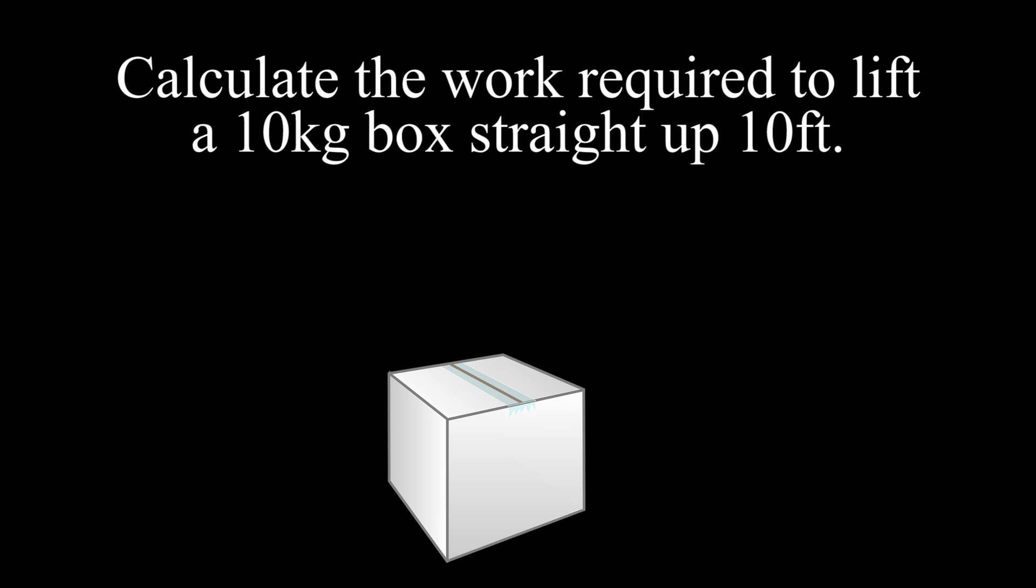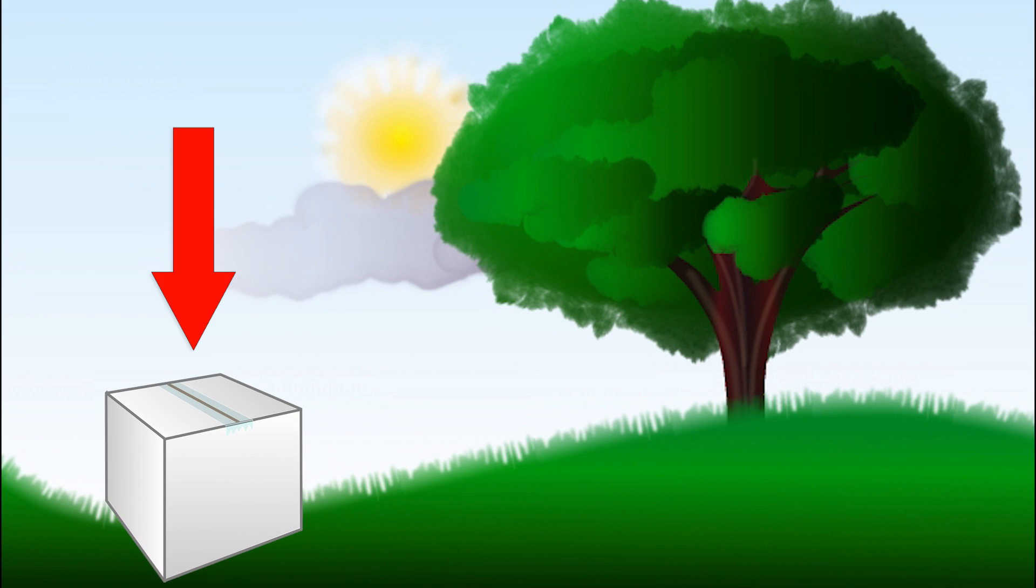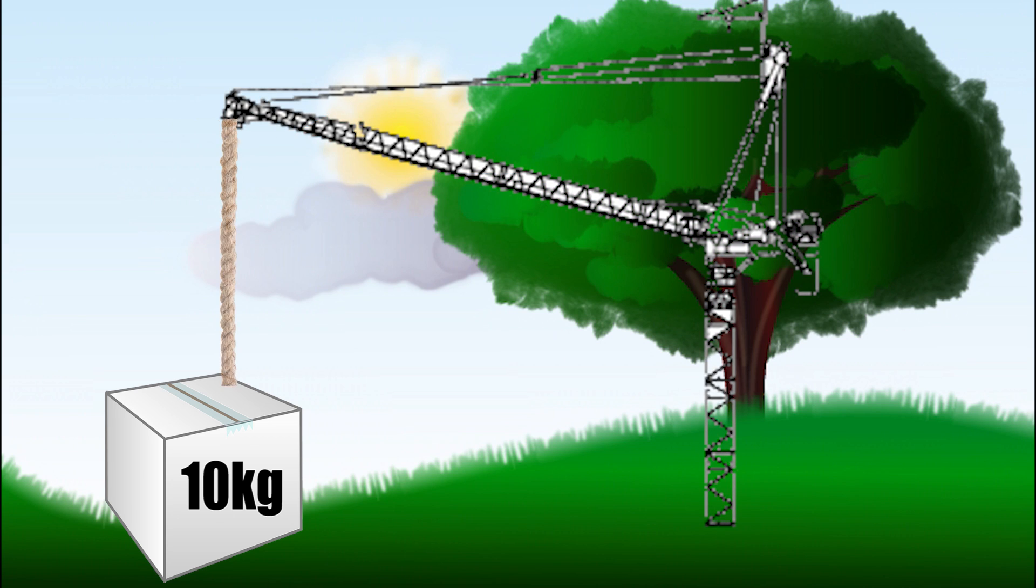Draw a friggin picture. Start with the ground, throw in some grass, maybe a tree or two, make it look pretty. Now we've gotta get this box, let's label it 10 kilograms, up here, 10 feet. Sketch an imaginary crane of sorts and a rope connecting it to the box.